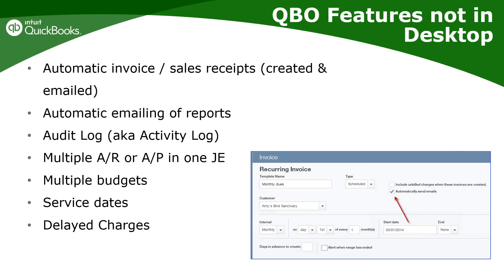Other QBO-only features include: multiple budgets, the ability to enter service dates on invoices (which may differ from the invoice date), and delayed charges — where you enter charges throughout a period and then invoice for all of them at once. These are all things you can do in QuickBooks Online that are not available in the desktop version.